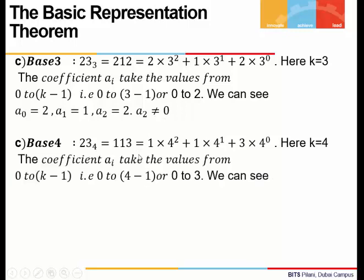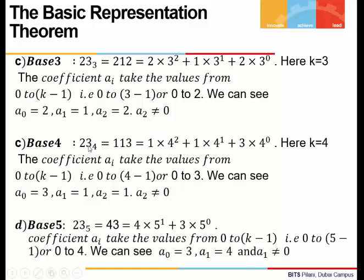When we represent 23 to base 4, we see it comes out to be 113. We have divided 23 by 4 repeatedly. We can write 23 as powers of 4 in base 4 representation. The coefficients here can take values from 0 to 3. We can see that condition is also satisfied, and the largest power of 4 has coefficient 1, which is non-zero.